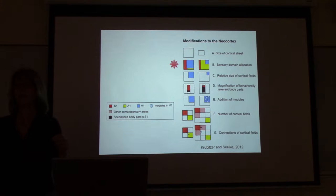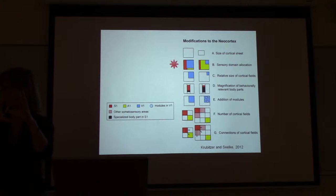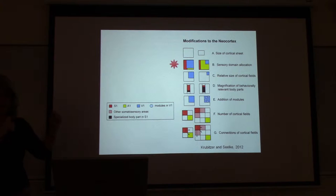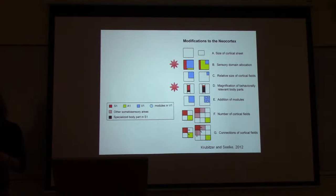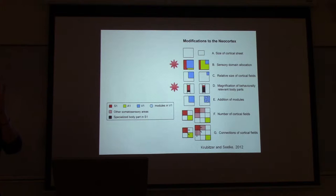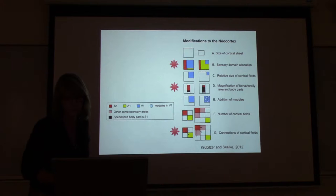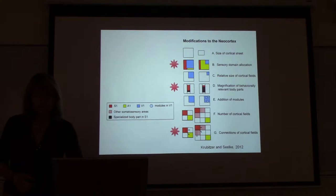Homologous fields are shown in similar colors, and one thing you'll notice is that these brains look different: there are more cortical fields, the relative size of some fields is different, and the spatial location of the fields has changed. My question is how do these transformations occur? I'm going to talk about a couple of modifications to the neocortex. One is changes in sensory domain allocation — the cortical sheet is divided into portions processing visual, auditory, and somatosensory information, and the proportion devoted to each varies dramatically across species.